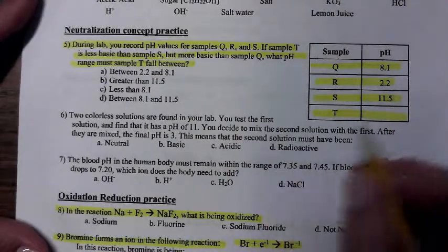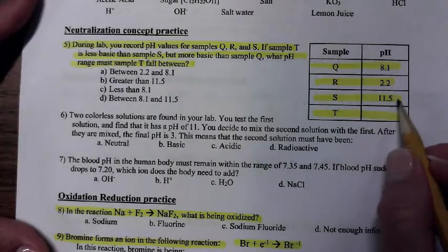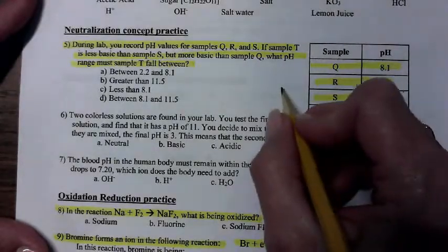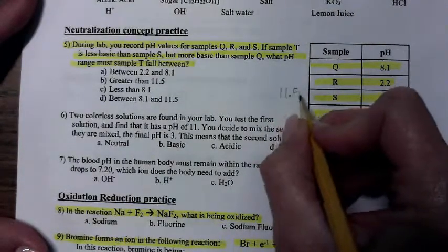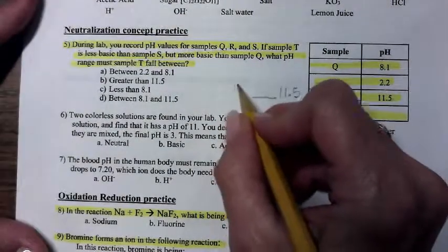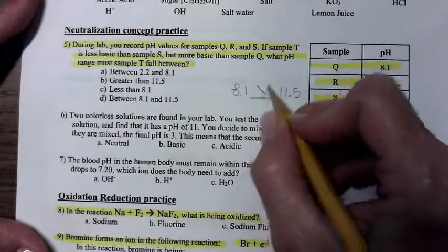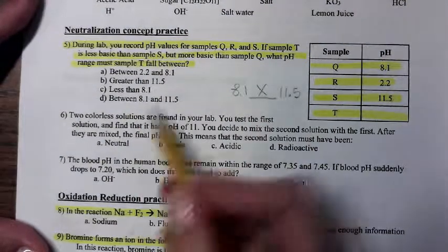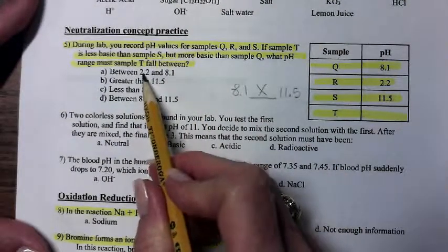Well, it says that it's got a pH that is less than 11.5, so something this way, 11.5, but more than 8.1. So it's somewhere in the middle here. So we look at the answers. Between 2.2 and 8.1? Nope.